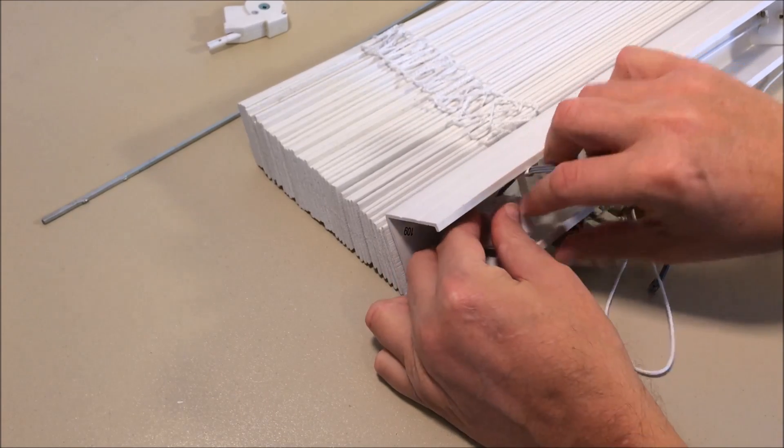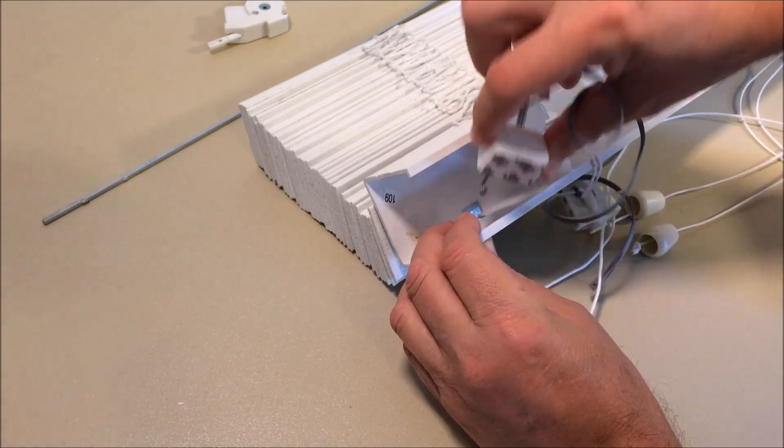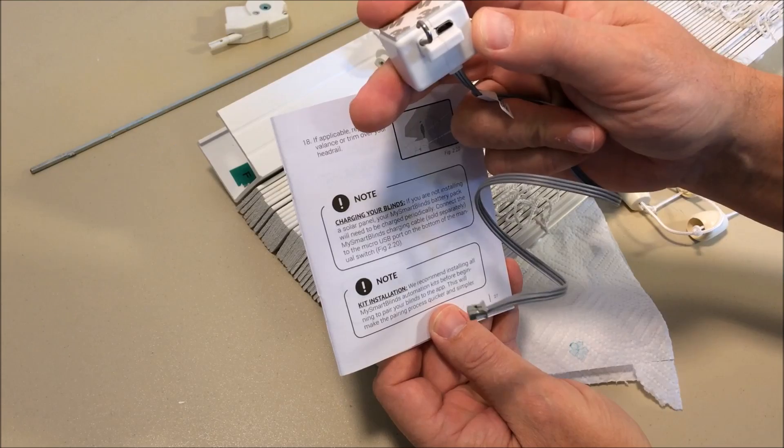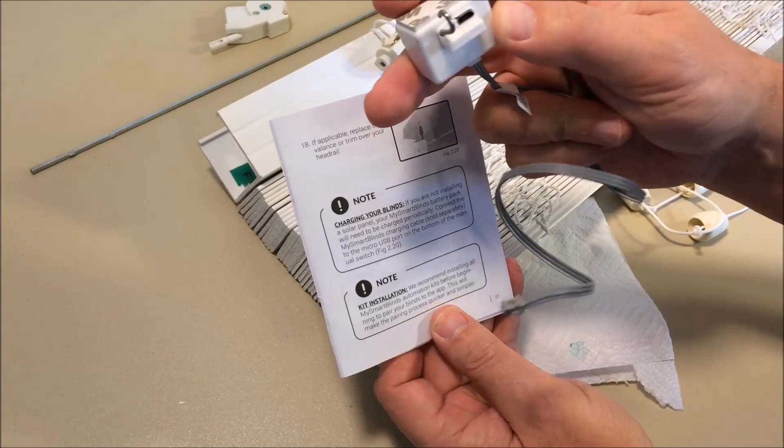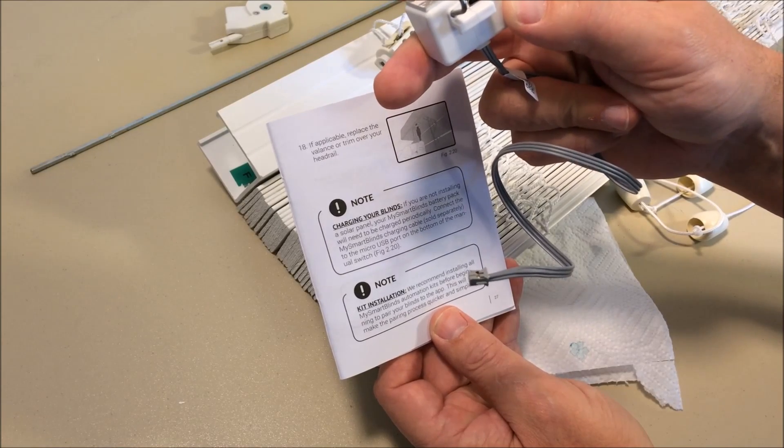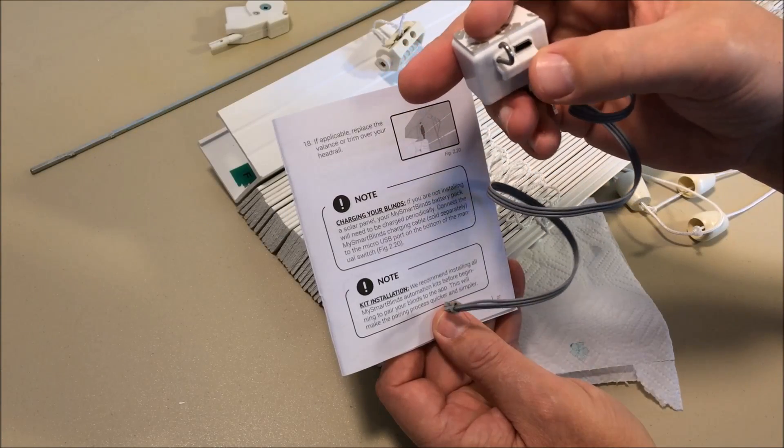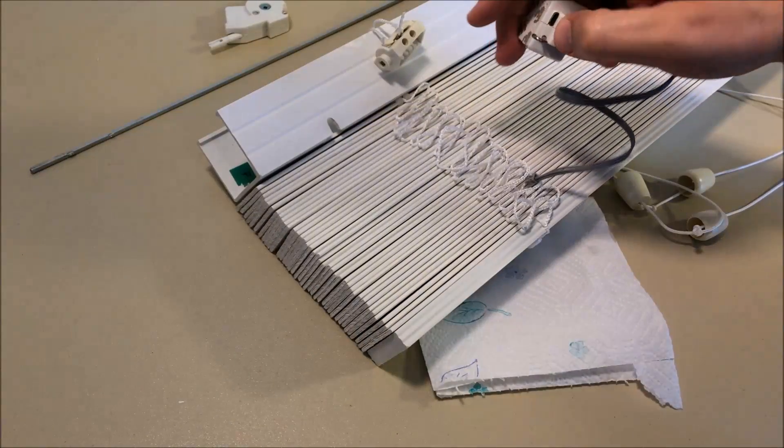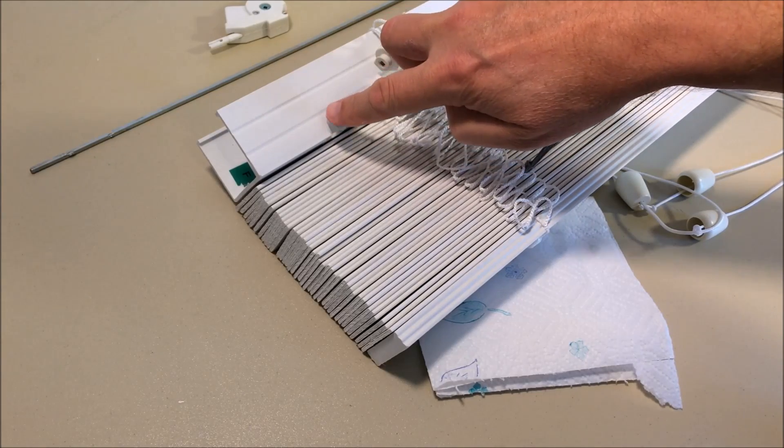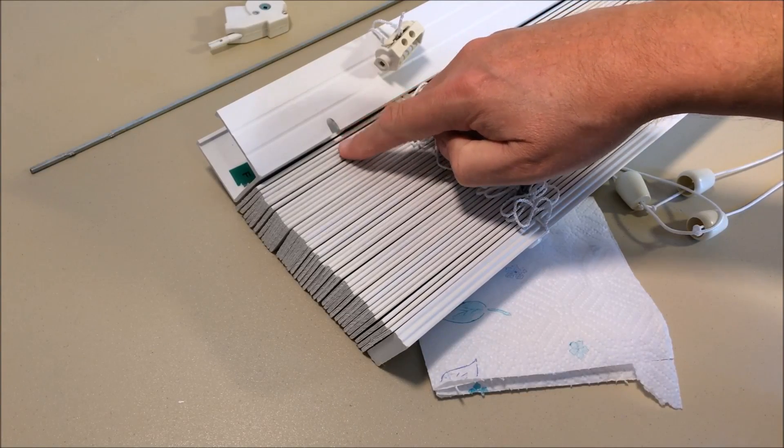I also recommend doing a dry fit and making sure you absolutely understand how this manual switch from your automation kit should be installed in here. The reason I say that is because it looks like there's a little USB connector right there, so we're probably going to need access to that in the future. That is the USB connector that permits you to recharge the battery. This battery is going to have to be recharged about every six months, depending on how many times you open, close, and actuate your blinds.